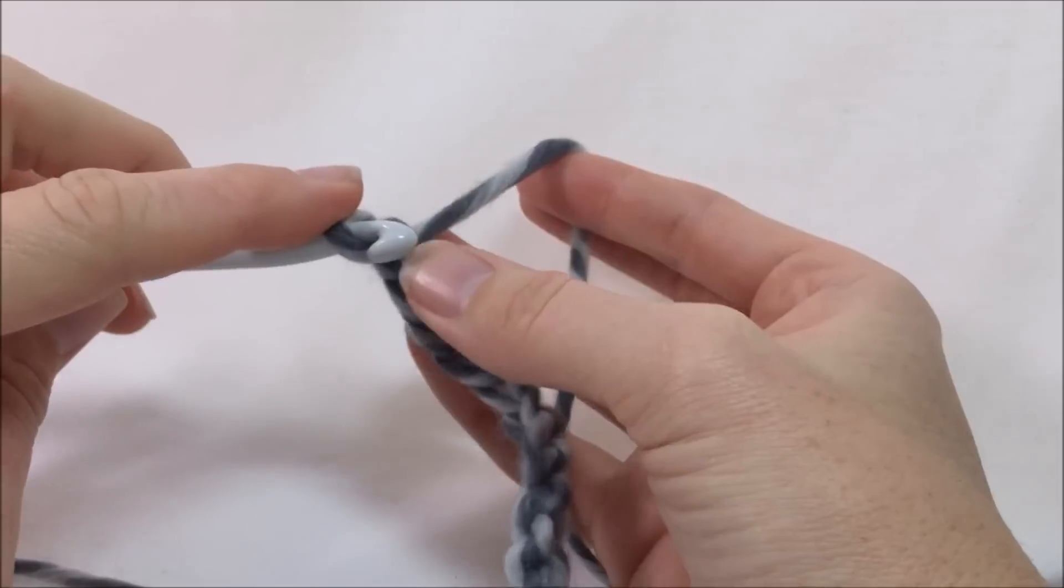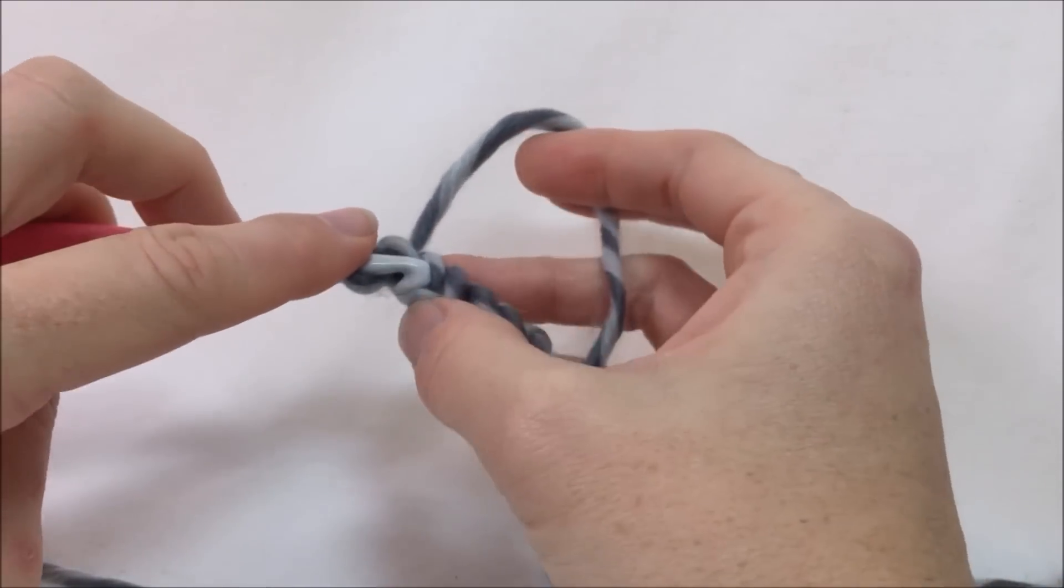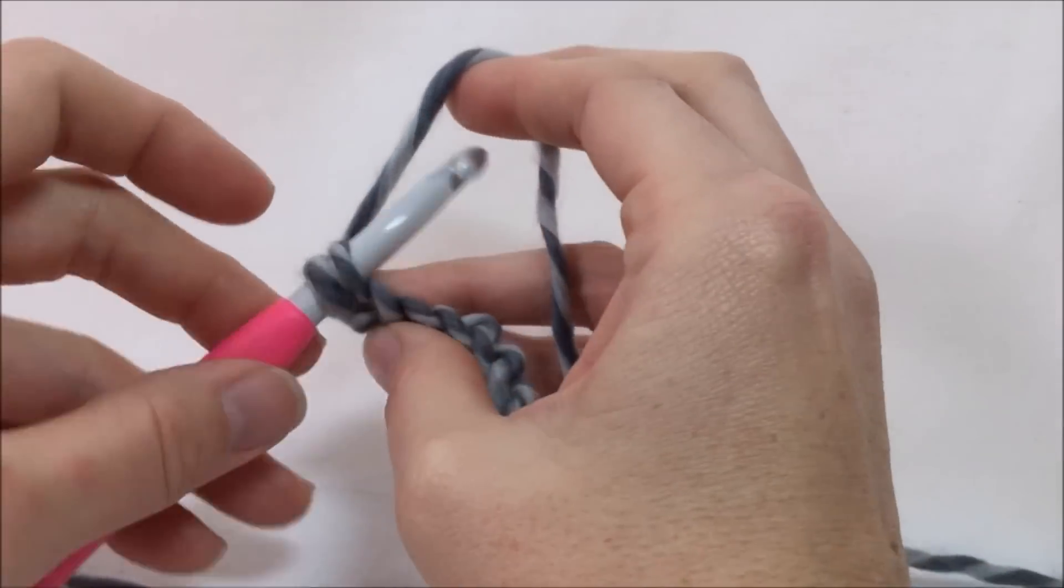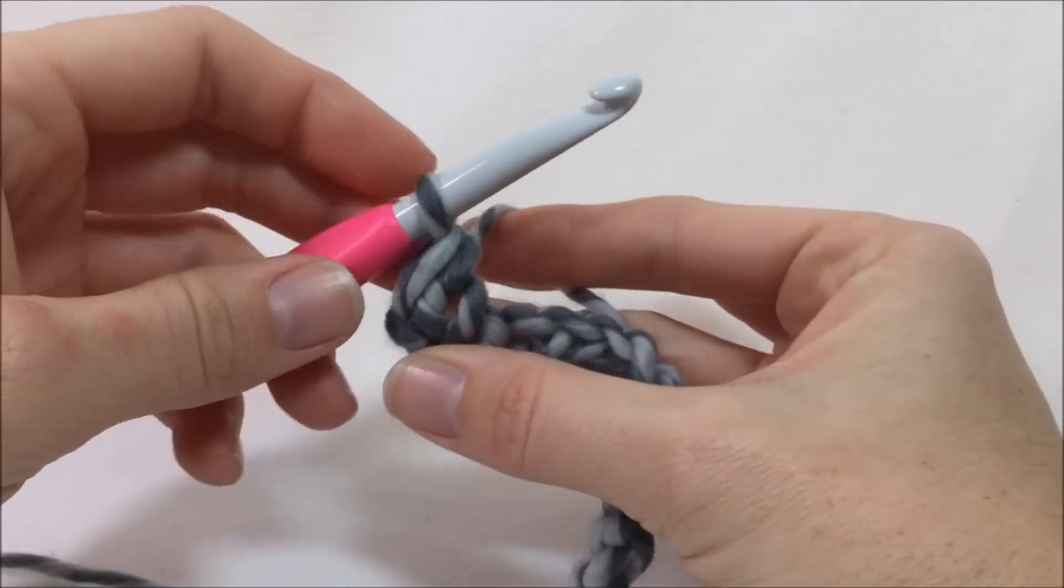We don't count this loop on my hook. So for row one, we're just single crocheting. So to do that, we skip the first chain and we start working into the second chain. So I just insert my hook in that back loop, yarn over, pull up a loop, yarn over, and pull through two.